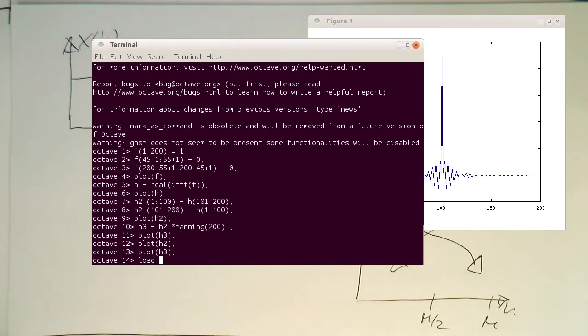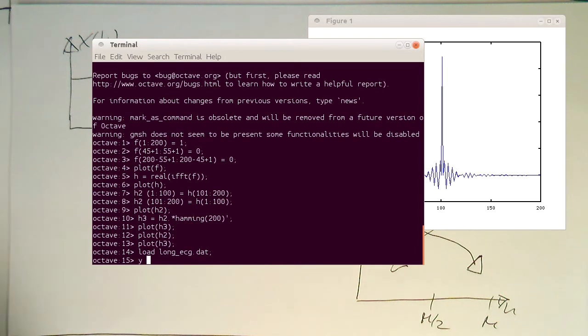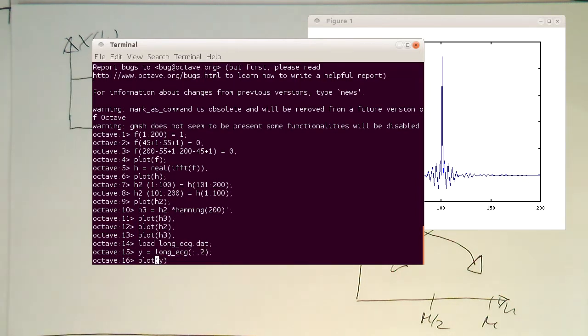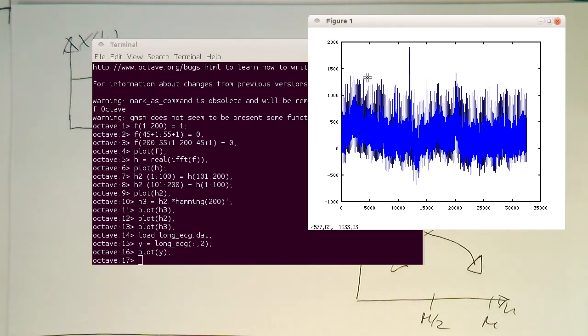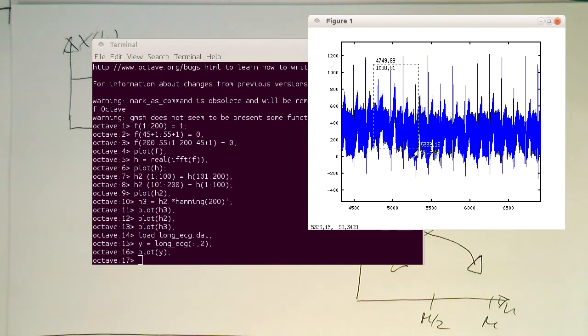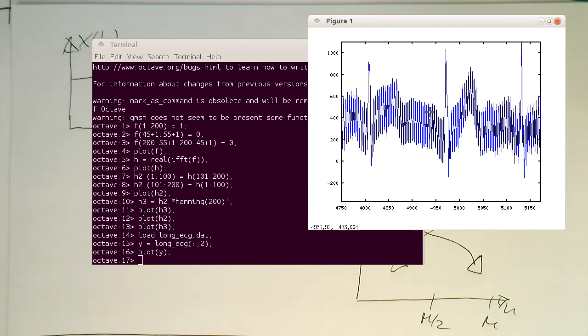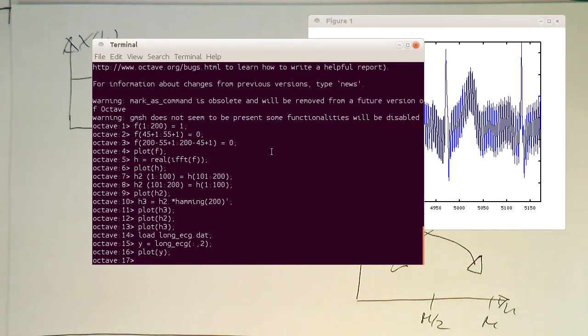So let's load this, let's call it long ECG.dat. Let's just extract the actual ECG, which is in the second column. Let's plot this quickly. So that's our ECG before filtering. And so if we zoom in here in a heartbeat, we see the 50 Hertz component is quite strong. So now let's filter this here.